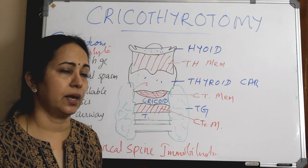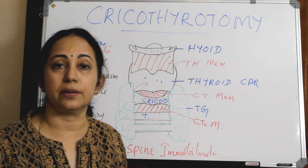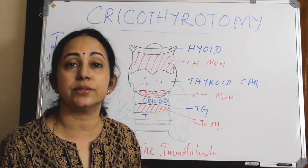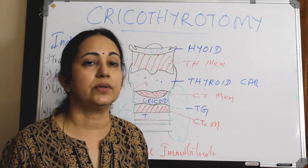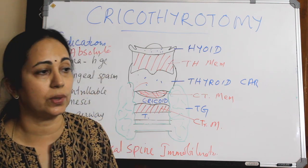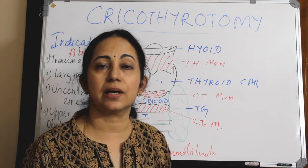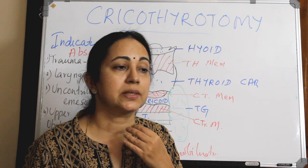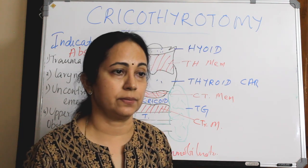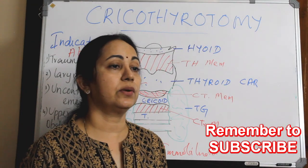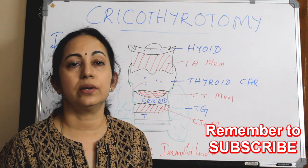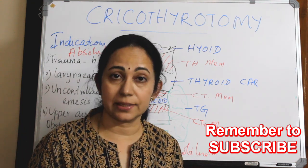Regarding contraindications, there is actually no absolute contraindication in this emergency situation. However, some relative contraindications exist: age is one — we usually will not do a cricothyroidotomy in children less than 5 to 12 years of age, as the larynx is at a higher level and there is a high chance of subglottic stenosis. It should also be done with high caution in cases of fractured larynx, fractured laryngeal cartilages, or a known history of tracheal surgeries.